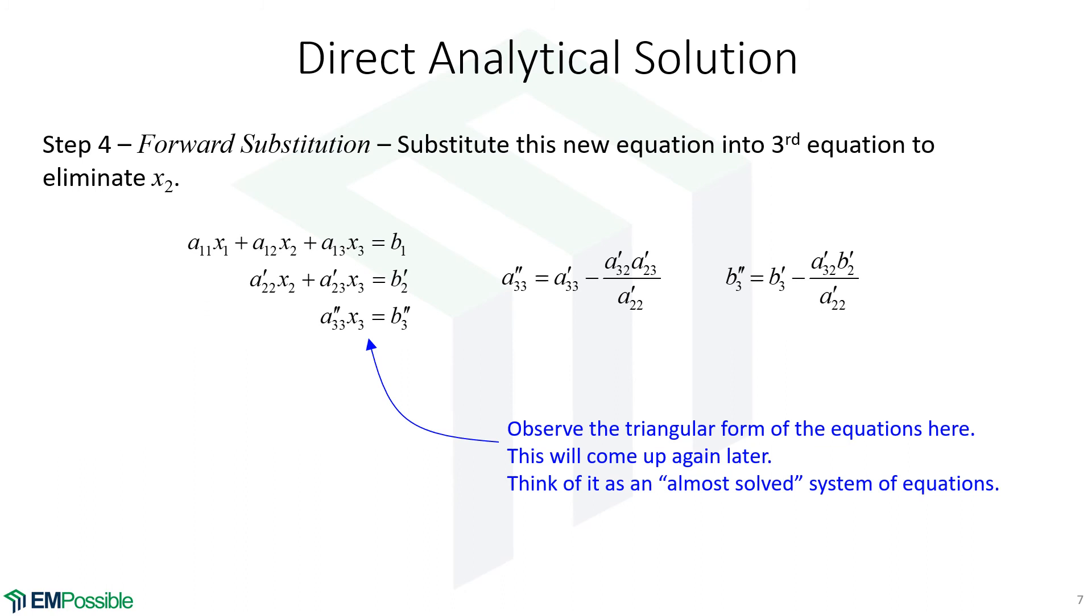Now, an interesting thing has happened here. Notice this is formed sort of a triangle and it will turn out we're going to do backwards substitution to finish solving this. But in this triangular form, this problem is very close to being solved. So think of a triangular system as an almost solved system of equations where it's very fast, very efficient, very simple to solve from here. And you will see that.